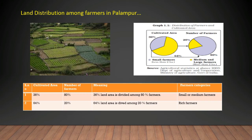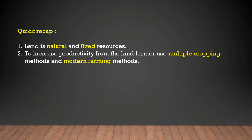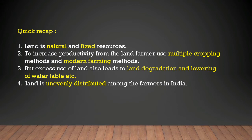To recap the first factor of production: land is a natural and fixed resource. To increase productivity from the land, farmers use multiple cropping and modern farming methods. However, excess use of land leads to land degradation and lowering of the water table, and land is unevenly distributed among farmers in India.